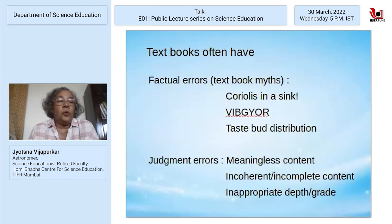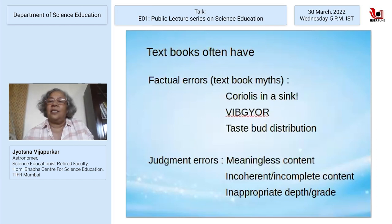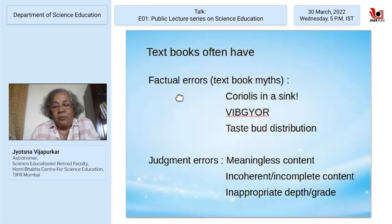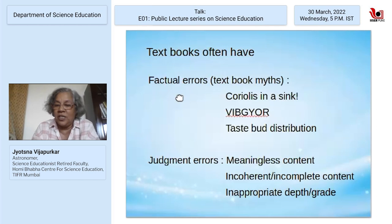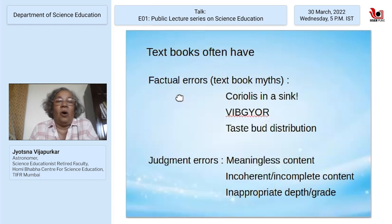Textbooks, quite apart from being age-inappropriate — even in grade five it took us a couple of weeks to get children to understand the round earth — also have a lot of factual errors. For example, textbooks in the US talk about how the Coriolis force in a sink makes water go one way or another in different hemispheres, which is completely wrong because it's a large-scale force. Countries on the equator have actually made a tourist business of demonstrating this, manipulating it very cleverly. Or consider the seven colors of the rainbow — go out and see if you can actually identify seven distinct colors.